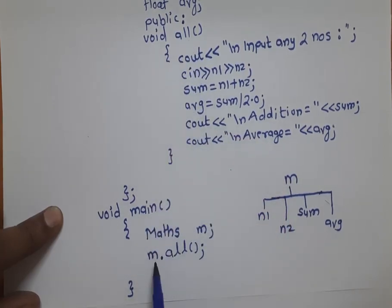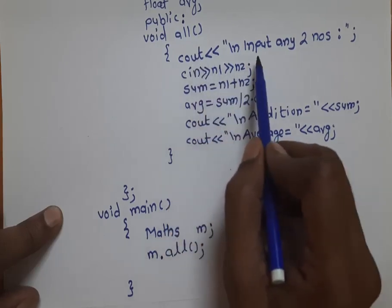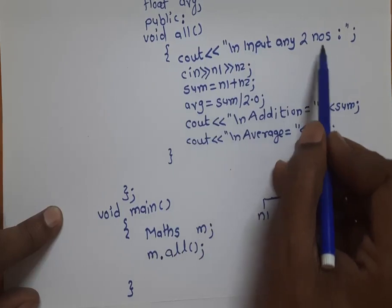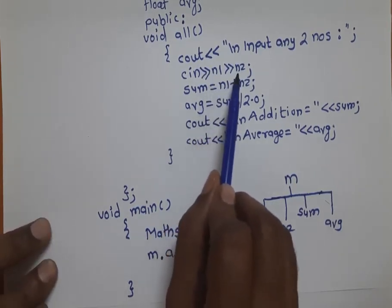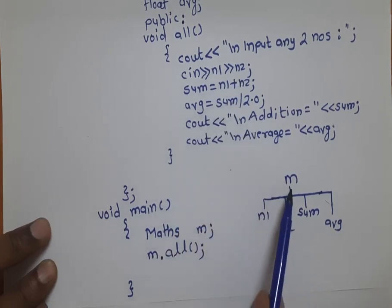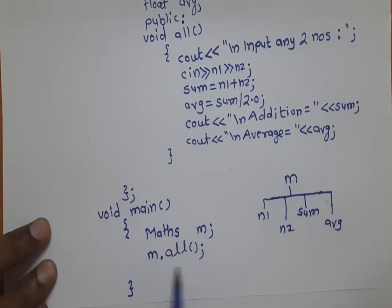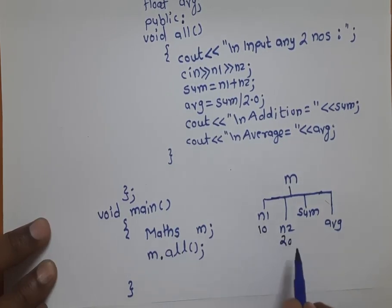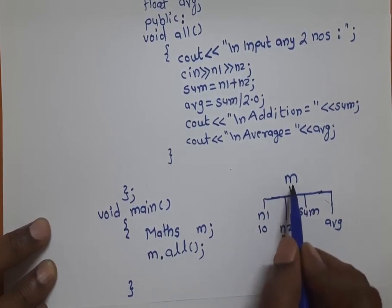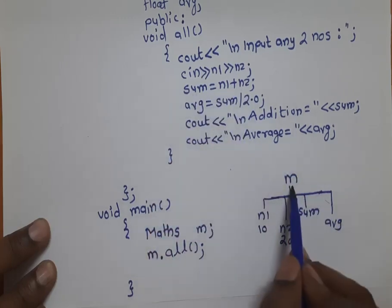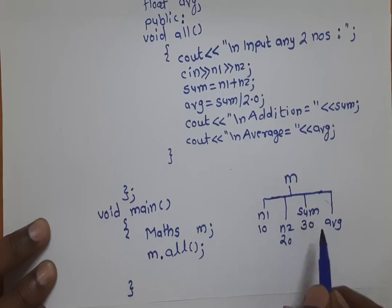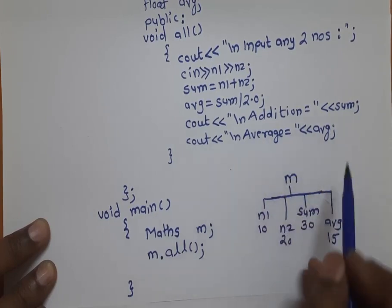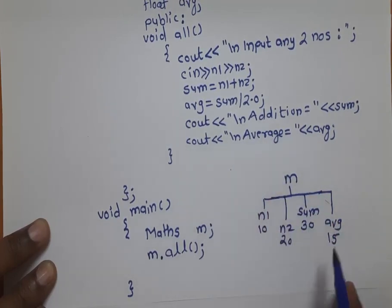When we execute the program, the compiler starts with main, creates object m, then executes m.all(), going to execute the 'all' member function with respect to m. First it executes cout, which like a printf statement gives the prompt 'Input any two numbers'. Then the cin statement gives a blinking cursor. If you input two values — say 10 and 20 — 10 is given to n1 of m and 20 is given to n2 of m. Then sum = n1 + n2, and all variables are considered from m since we called 'all' with respect to m. It calculates sum, then calculates average, and displays addition equal to 30 and on the next line average equal to 15.0.